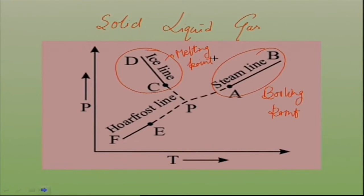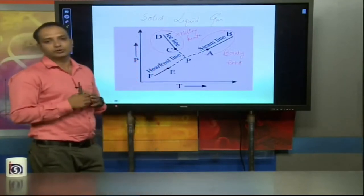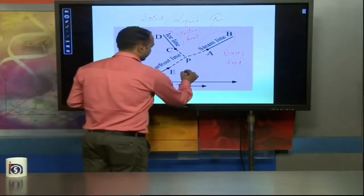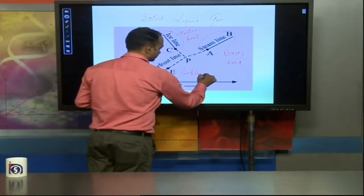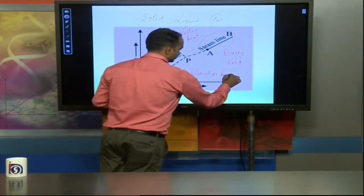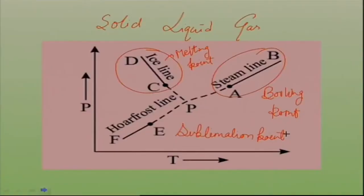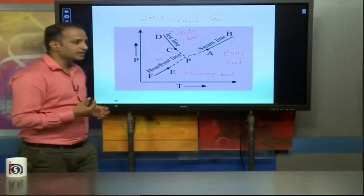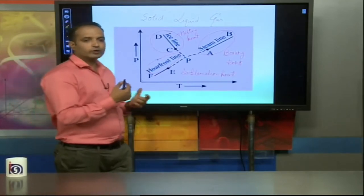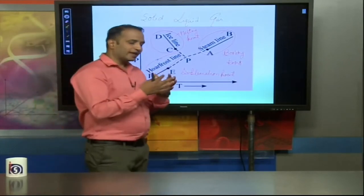Third: when solid is converted directly to gas — solid to gas without passing through the liquid form — this point is called the sublimation point. The line represented by E to F is your hoarfrost line. Solid converts directly to gas without passing through the liquid phase. An example of this is naphthalene (camphor balls), which converts directly from solid to gas.